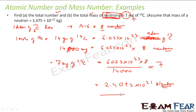The logic is: first find how many neutrons are in one atom, then use the mole-to-grams relation to scale up, then convert grams to milligrams. The second part asks for total mass of those neutrons — total mass = number of neutrons × mass of one neutron.